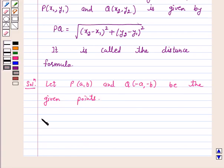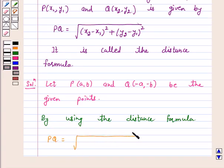By using the distance formula, which is our key idea for this question, we have distance PQ = √[(x2-x1)² + (y2-y1)²], that is √[(-a-a)² + (-b-b)²].